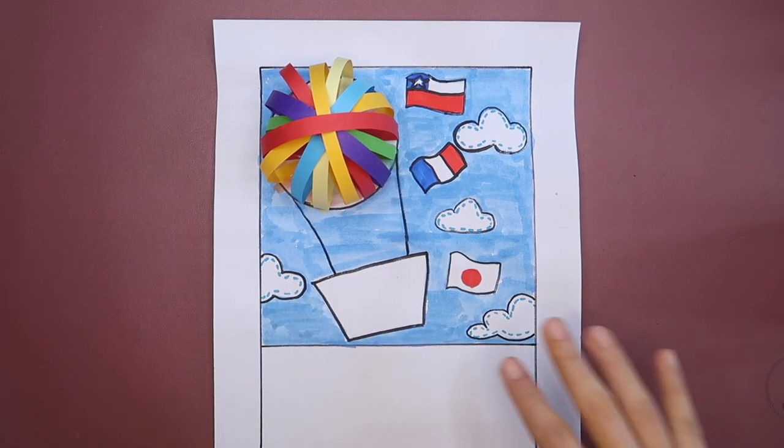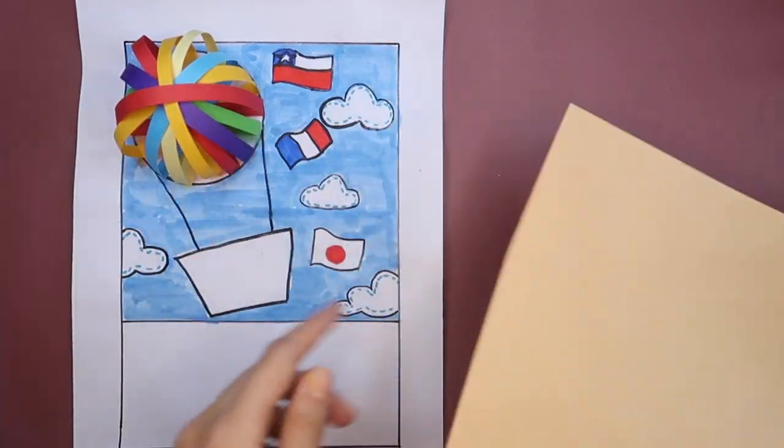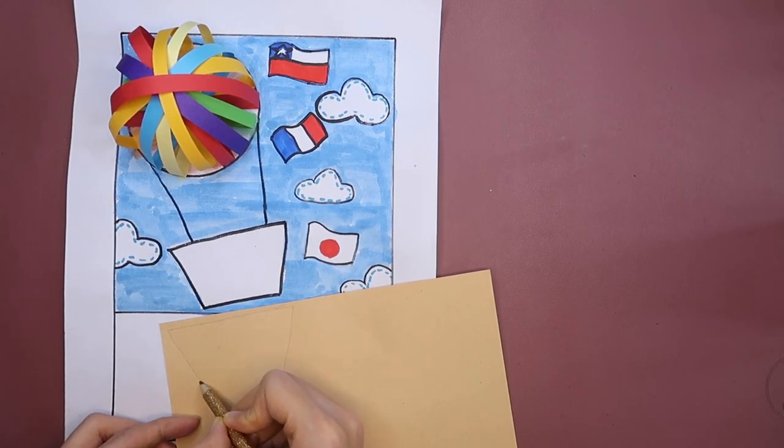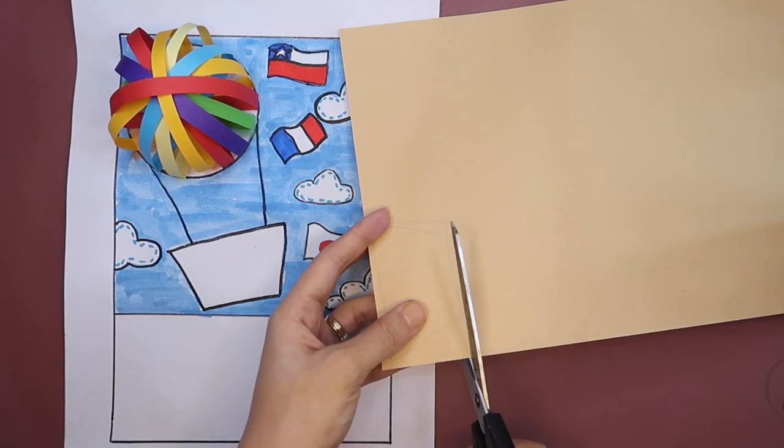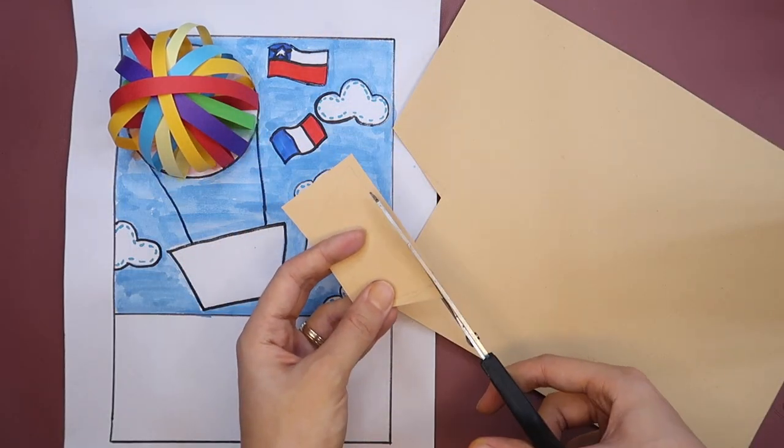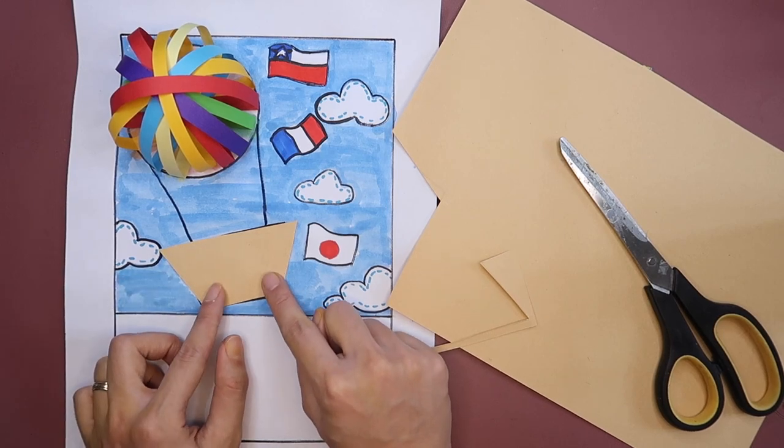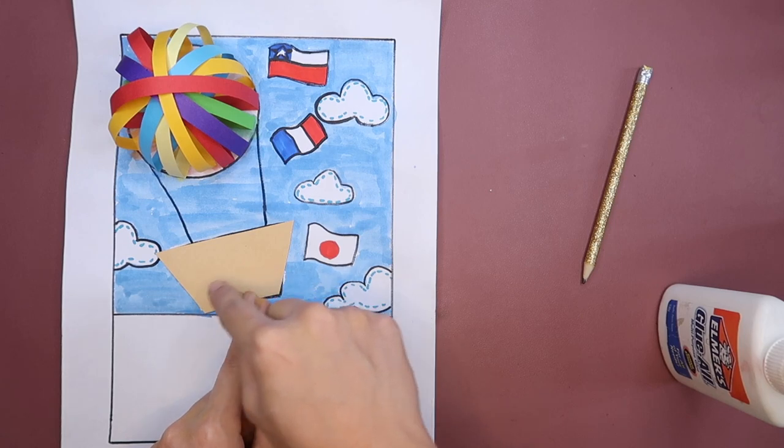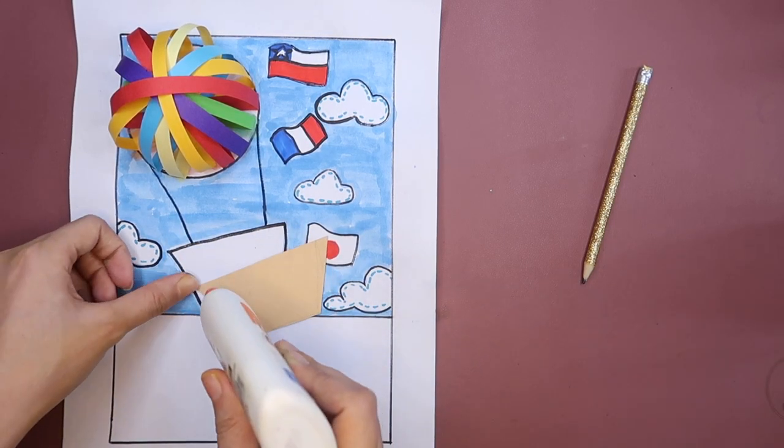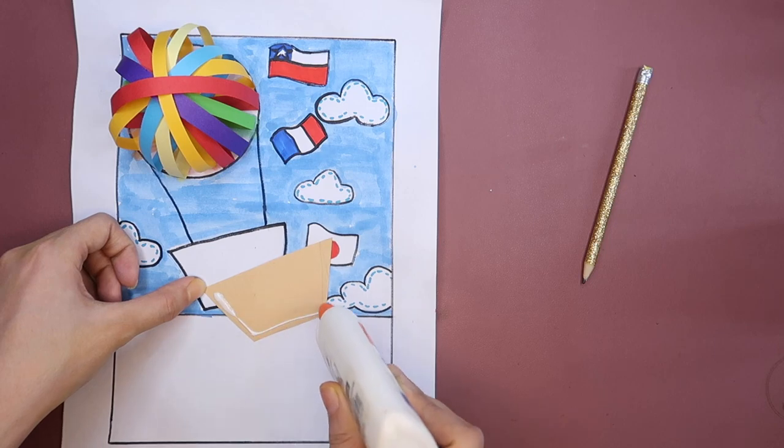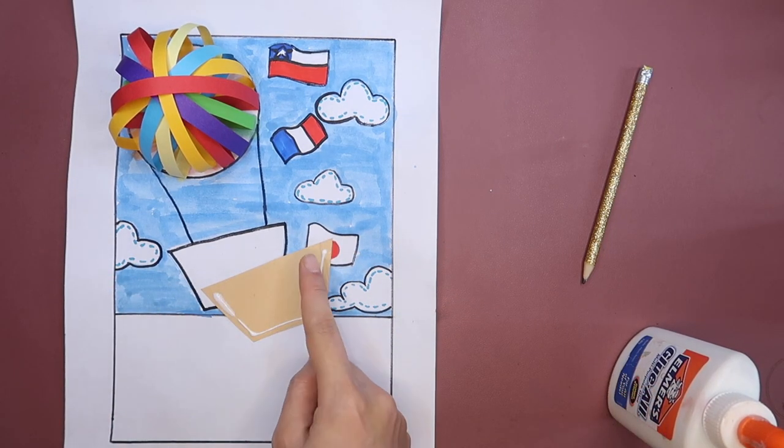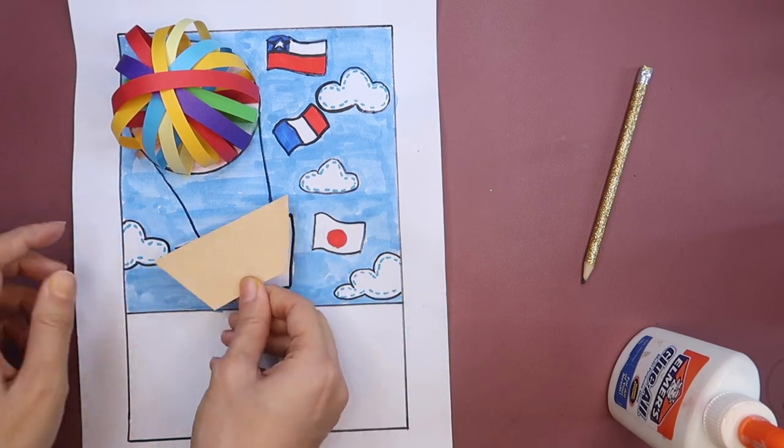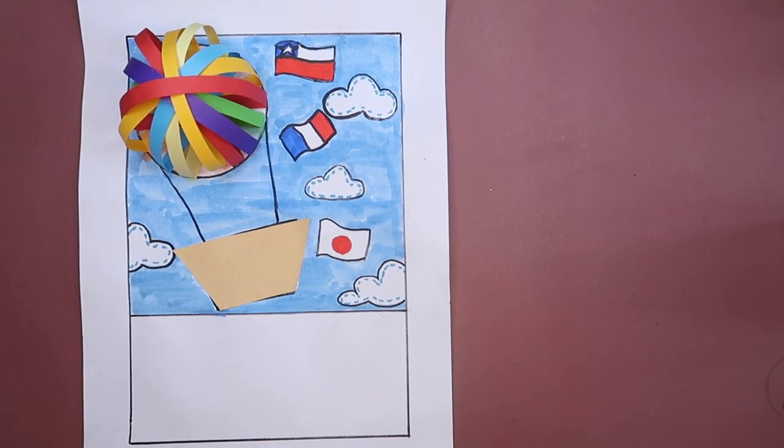Now, let's create the basket. Use any colored paper. I chose this light brown color. Draw the same shape in the paper and cut it. We're only going to glue the three sides of the basket. Do not put glue at the top so we can create a pocket for our paper doll later.